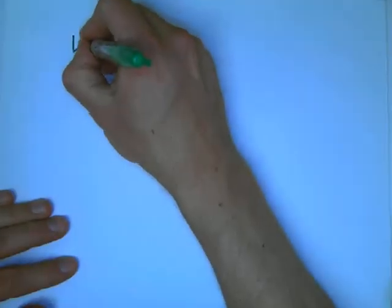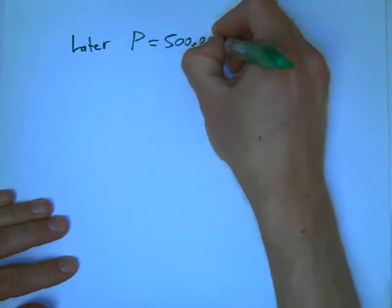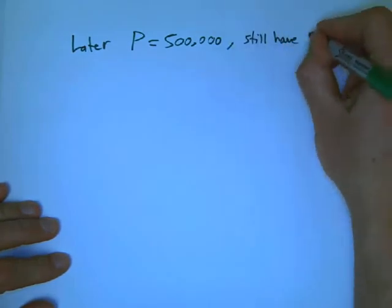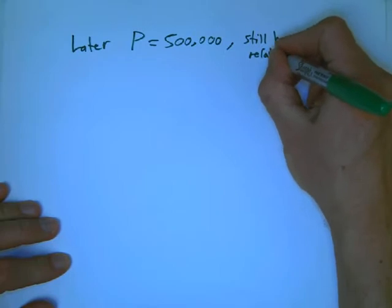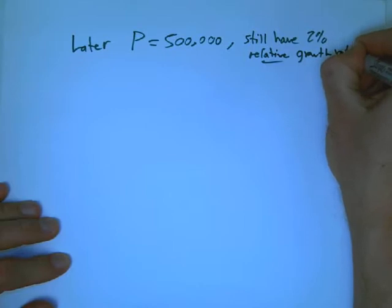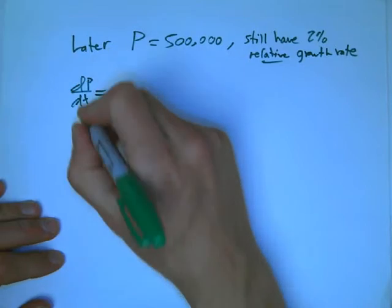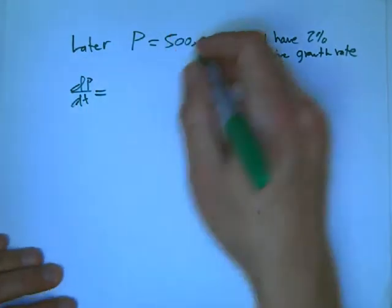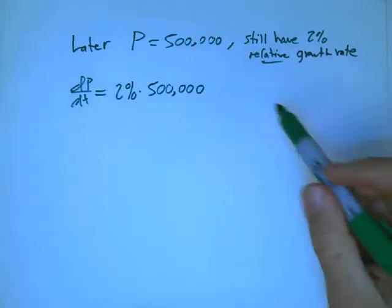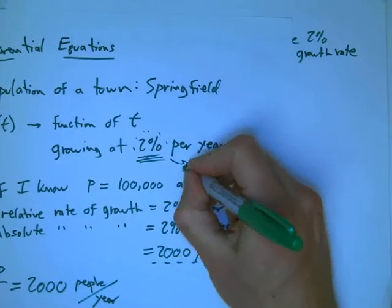So just one more quick example. Suppose much later, let's say P is 500,000 people, but we still have that 2% relative rate of growth. Then dp/dt is going to be that 2% times 500,000 people. So you wait a year, and if that 2% figure is still accurate, let's say that's a constant.